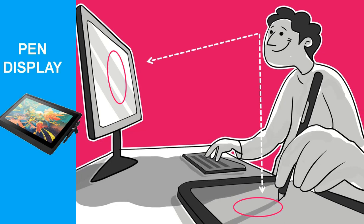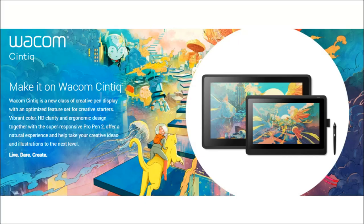A pen display is a bit more complex to install and requires a power source to work with. However, it has its own advantages as the device itself has a display screen onto which you can directly draw — it is intuitive and easy to use from the moment you install it. Go for the Wacom Cintiq 13-inch size. I have one and have been using it for more than 13 years, and it works like a charm — it never broke down and never let me down.